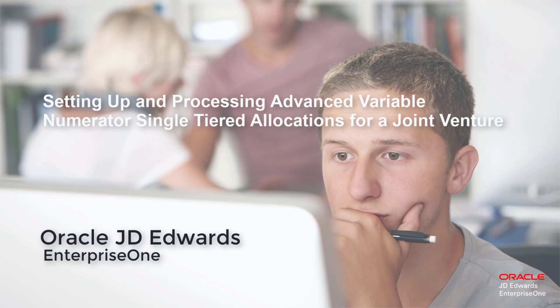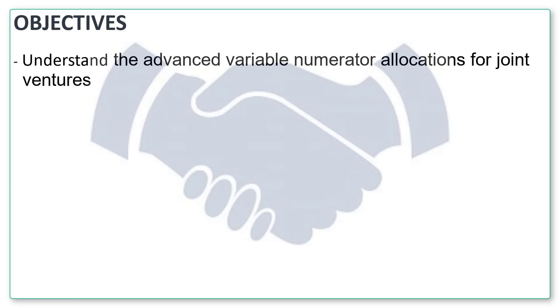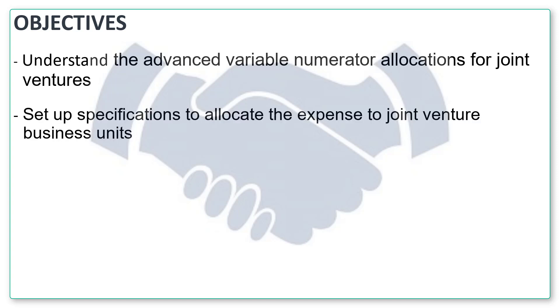Hi, welcome to the tutorial on setting up and processing advanced variable numerator single-tiered allocations for a joint venture. The objectives of the tutorial are to understand advanced variable numerator allocations for joint ventures, set up specifications to allocate the expense to joint venture business units, and compute and review allocated amounts.